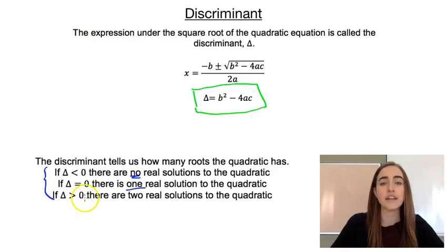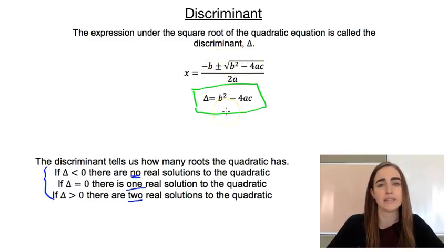Now if the discriminant is greater than zero, then we end up with two solutions or two x-intercepts, because we have that plus or minus situation of whatever that number comes out to be.